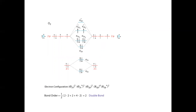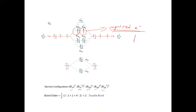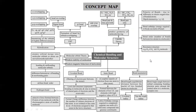For example, the molecular energy level diagram of oxygen (O₂): electronic configuration is σ1s² σ*1s² σ2s² σ*2s² σ2pz² π2px² π2py² π*2px¹ π*2py¹. Even though the total electrons are even, oxygen has unpaired electrons in the anti-bonding orbitals, hence it is paramagnetic. The bond order is 2, hence oxygen has a double bond. This is the concept map of chemical bonding and molecular structure.